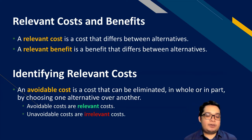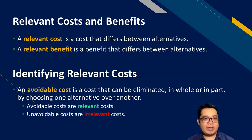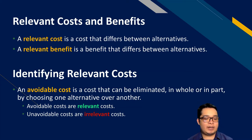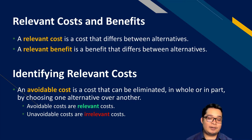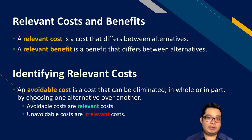A relevant cost is a cost that differs between alternatives. If you have two alternatives A and B, a relevant cost is a cost item that is different between the two. For example, if the cost of rental for alternative A is $10,000 and for B is $20,000, then rental is a relevant cost. But if marketing cost is $100,000 for both alternatives A and B, then marketing cost is not a relevant cost — it does not differ between alternatives and does not make or break the decision.